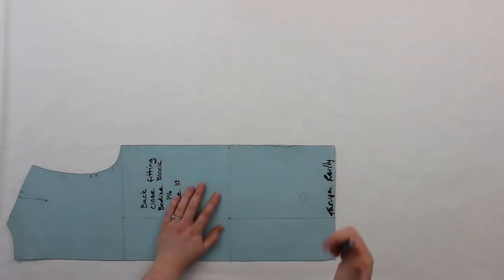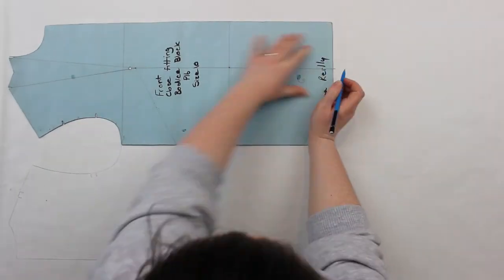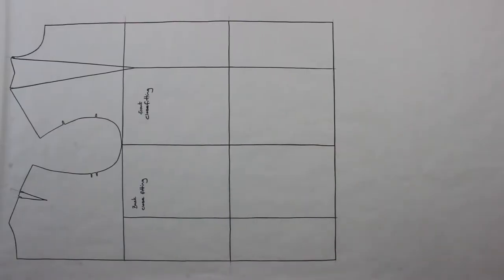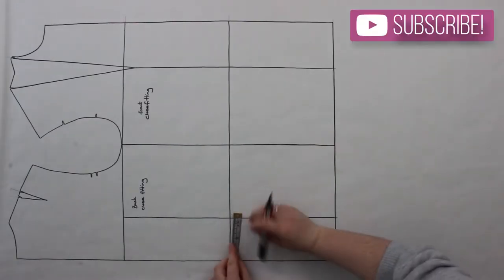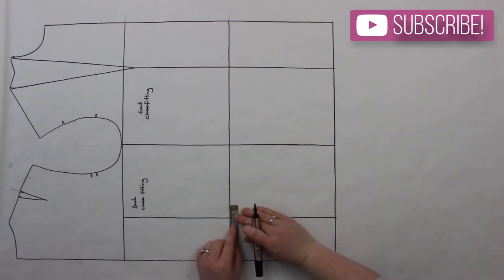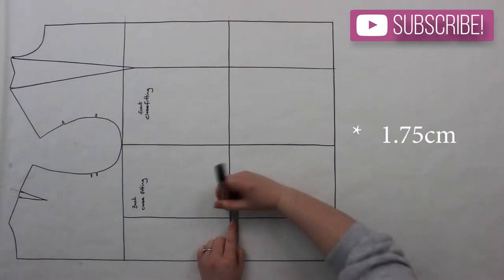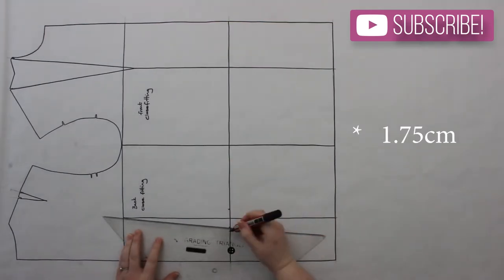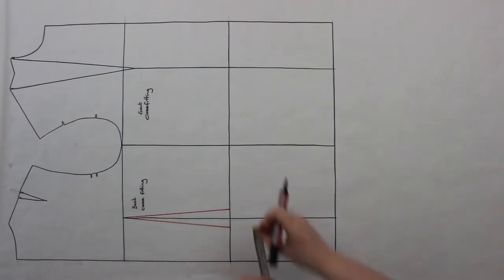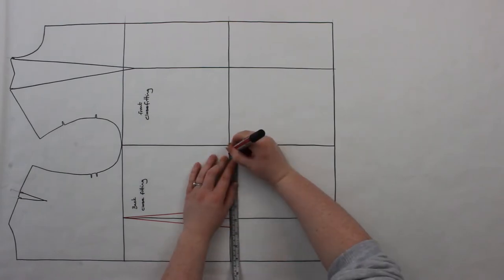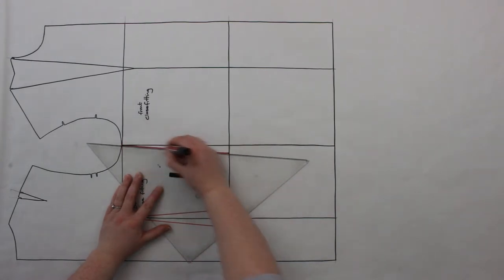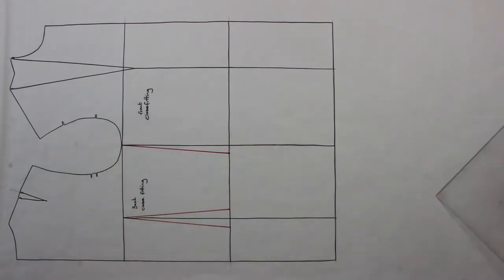Starting off, we're going to start with the back and then we're going to shape the waist. At the waist line in the back, you're going to create a dart that's 3.5 centimeters wide. Measure 0.75 centimeters each side of the line and then draw a line joining both of these new points up at the top of that line. At the back side seam, measure the side seam in by 1.5 centimeters and then draw a line from this point up to the armhole. This is going to be your new side seam.